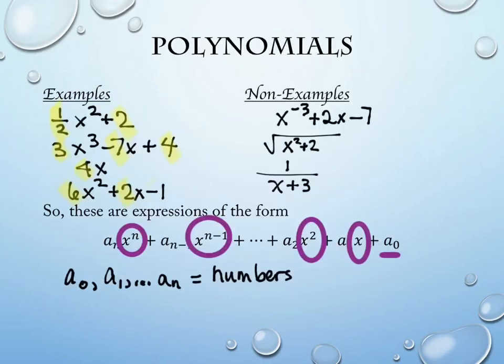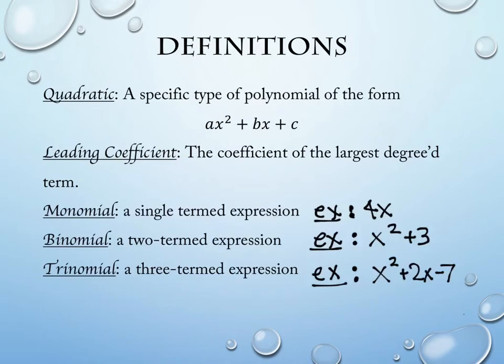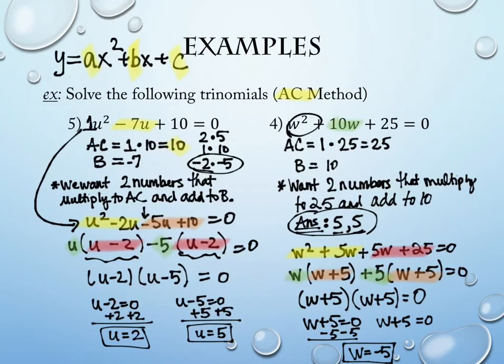And I called it the AC method and I told you it kind of feels a little bit funny right now to talk about it as the AC method because A is always 1 in the examples we're doing. Effective tomorrow, that's going to change. So everything we do today is still going to have that 1 as the coefficient of our x squared term.